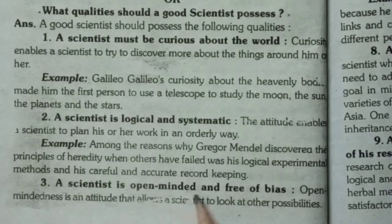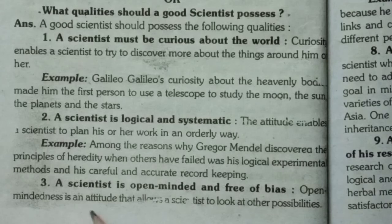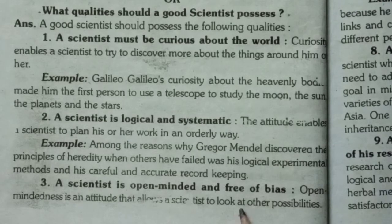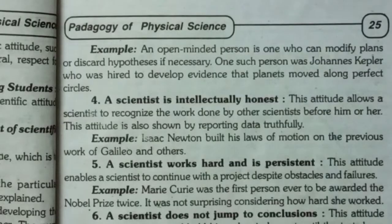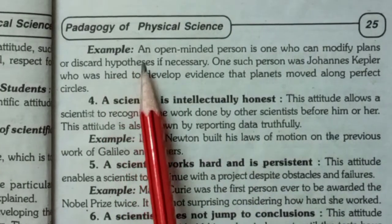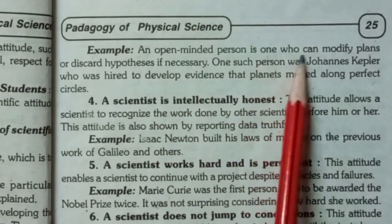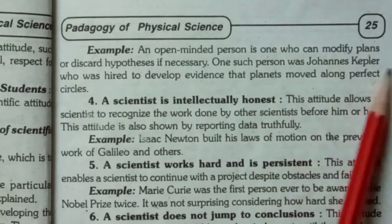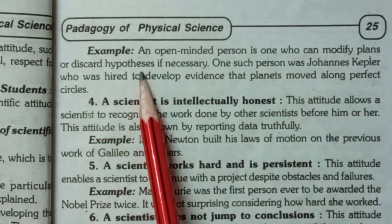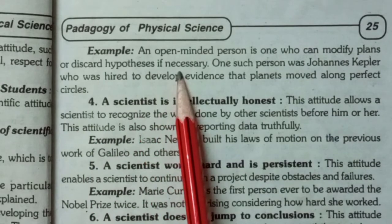Third, a scientist is open-minded and free of bias. Open-mindedness is an attitude that allows a scientist to look at other possibilities. An open-minded person is one who can modify plans or discard a hypothesis if necessary.